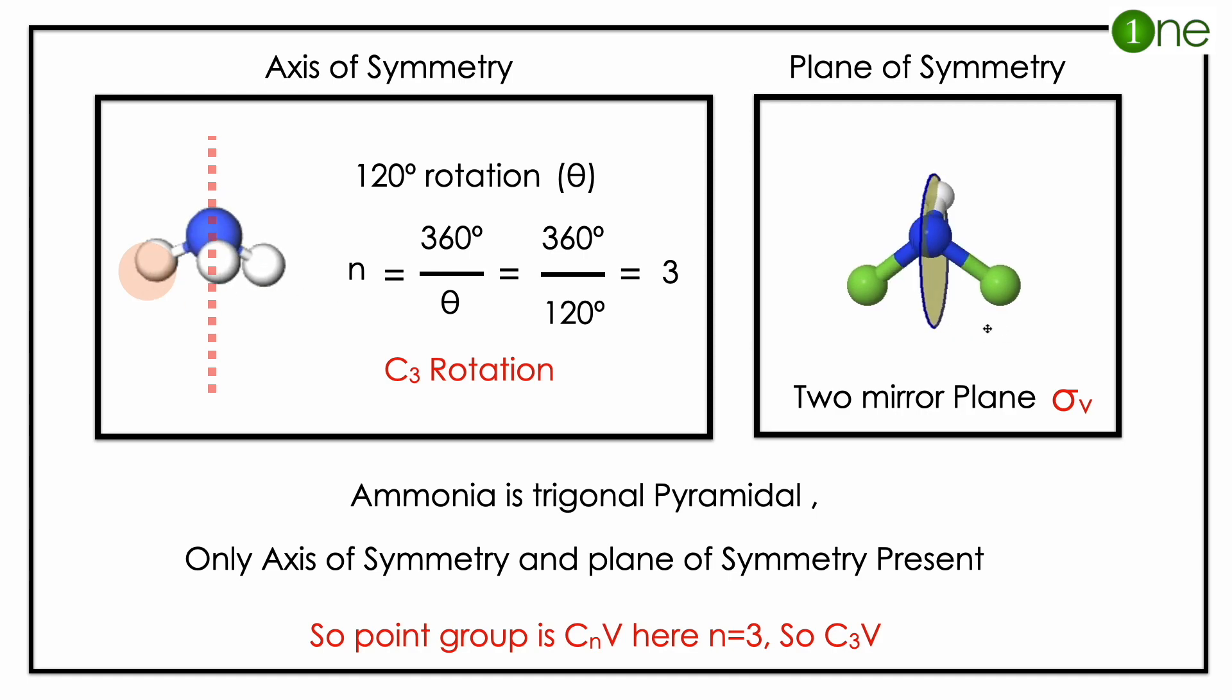There are two symmetry elements: axis of symmetry and plane of symmetry. Axis of symmetry, you have 120 degree rotation to get the same atom again and again. You have to have 120 degrees, so 360 by 120 gives C3 rotation.